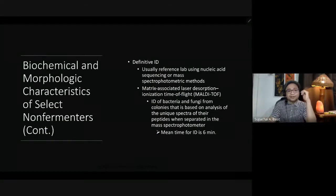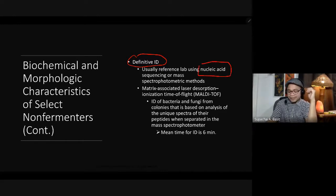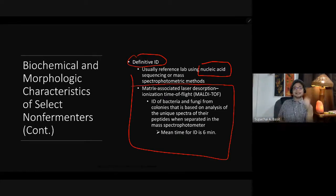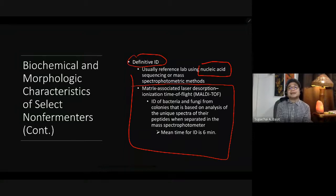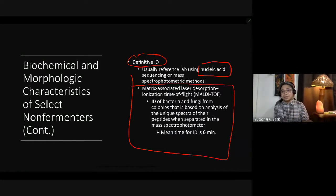Biochemical and morphologic characteristics of selected non-fermenters are best determined at reference labs using nucleic acid sequencing or mass spectrometric methods. Definitive identification is more expensive because nucleic acid sequencing is molecular-based. Another method is MALDI-TOF, which identifies bacteria and fungi from colonies based on analysis of unique spectra of their peptides when separated in a mass spectrometer. The mean time for identification using MALDI-TOF is 6 minutes.